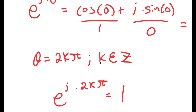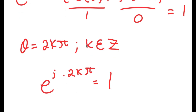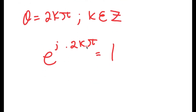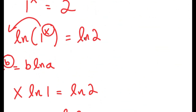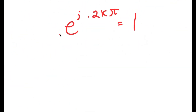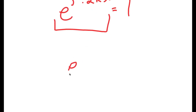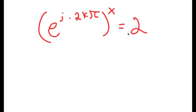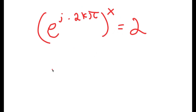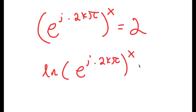Because e to the power of i times 2k pi equals 1, we can substitute this into our original equation 1 to the power of x equals 2. This gives us e to the power of i times 2k pi, all raised to the power of x, equals 2. Taking the natural log of both sides, I have ln of e to the power of i times 2k pi to the power of x equals ln of 2.